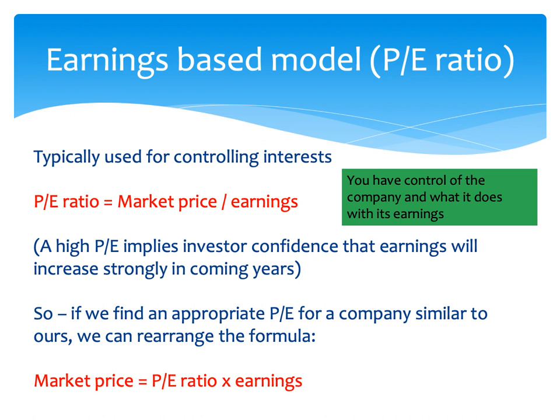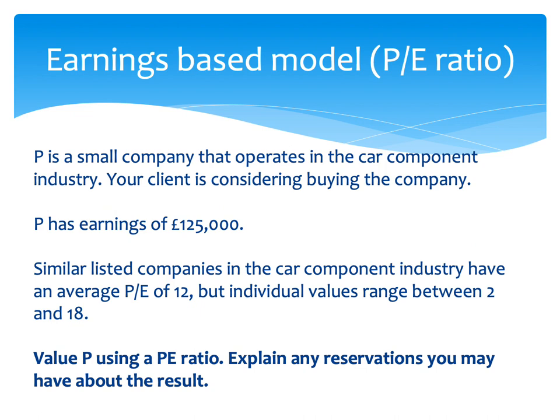This is used for controlling interests because if we control the business we control what it does with all of its earnings, so we value earnings as a whole. Earnings, from our point of view, will be the company's profit after tax less any preference dividends, because preference dividends go to preference shareholders and we're looking at buying ordinary shares.